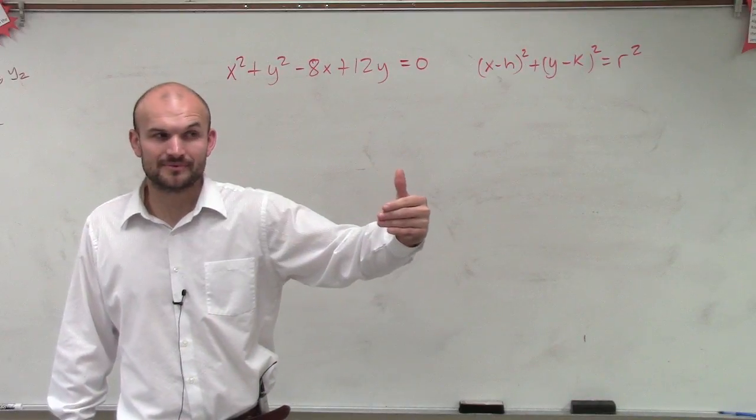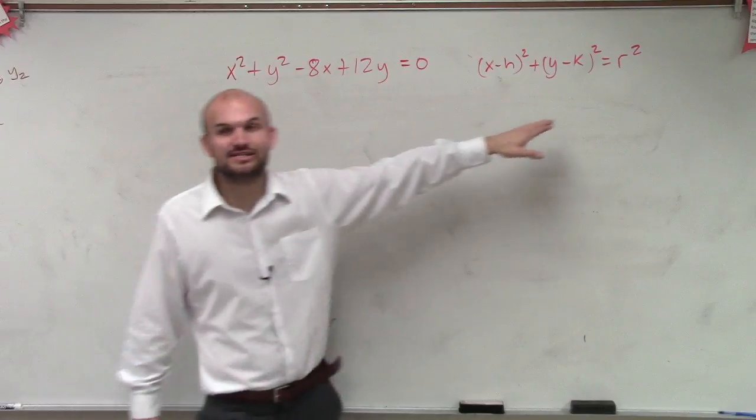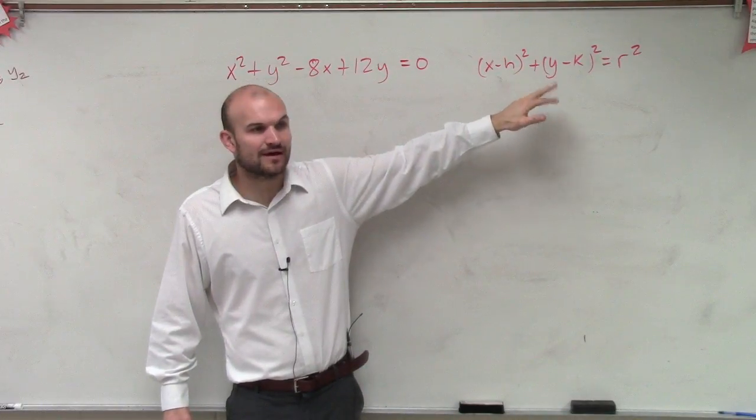Well, now, our perfect square trinomial. But now, you notice for a circle, how many binomial squares do we have? Two.